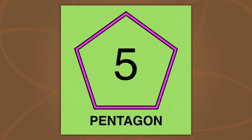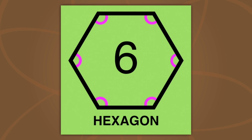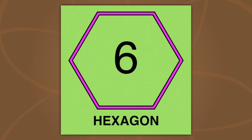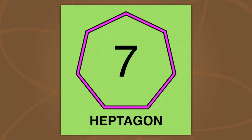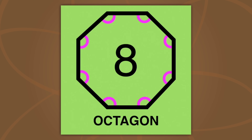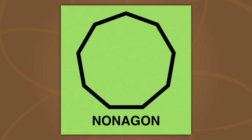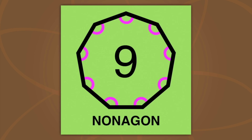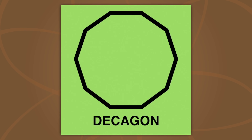A hexagon is a polygon with six angles, six sides. A heptagon is a polygon with seven angles, seven sides. An octagon is a polygon with eight angles, eight sides. A nonagon is a polygon with nine angles, nine sides. A decagon is a polygon with ten angles, ten sides.